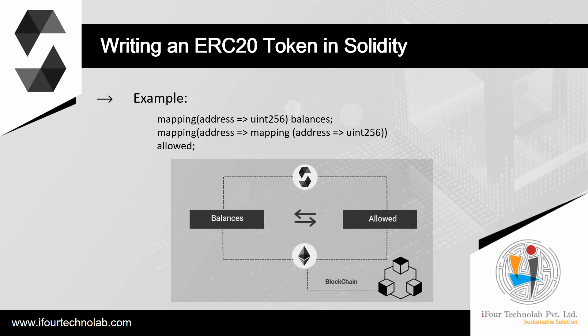Writing an ERC20 token in Solidity. First, we need to define two mapping objects — this is the Solidity notion for an associative array. `mapping(address => uint256) balances` and `mapping(address => mapping(address => uint256)) allowed`. The expression `mapping(address => uint256)` defines an associative array whose keys are of type address — a number used to denote account addresses — and whose values are of type uint256, a 256-bit integer typically used to store token balances.